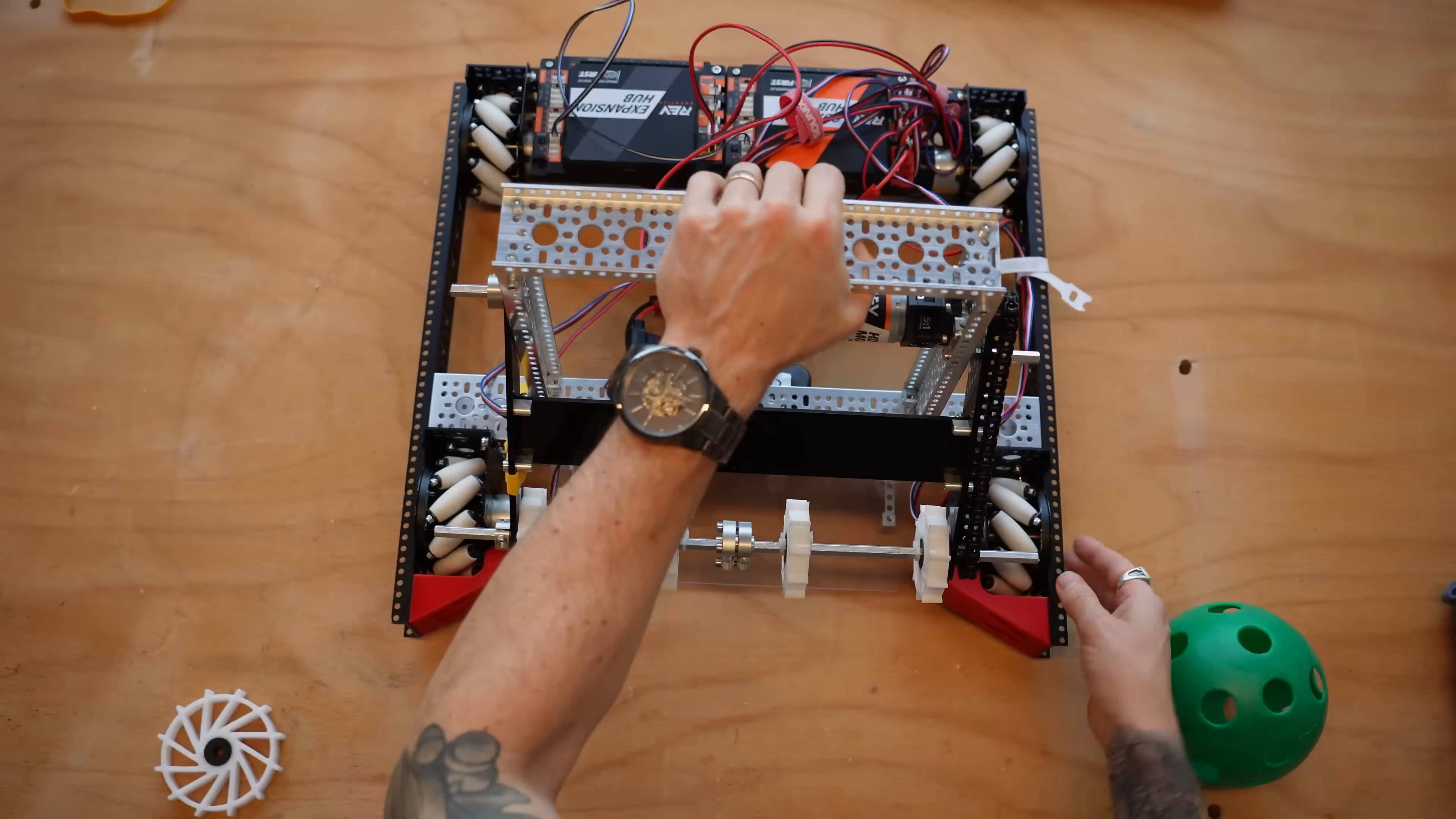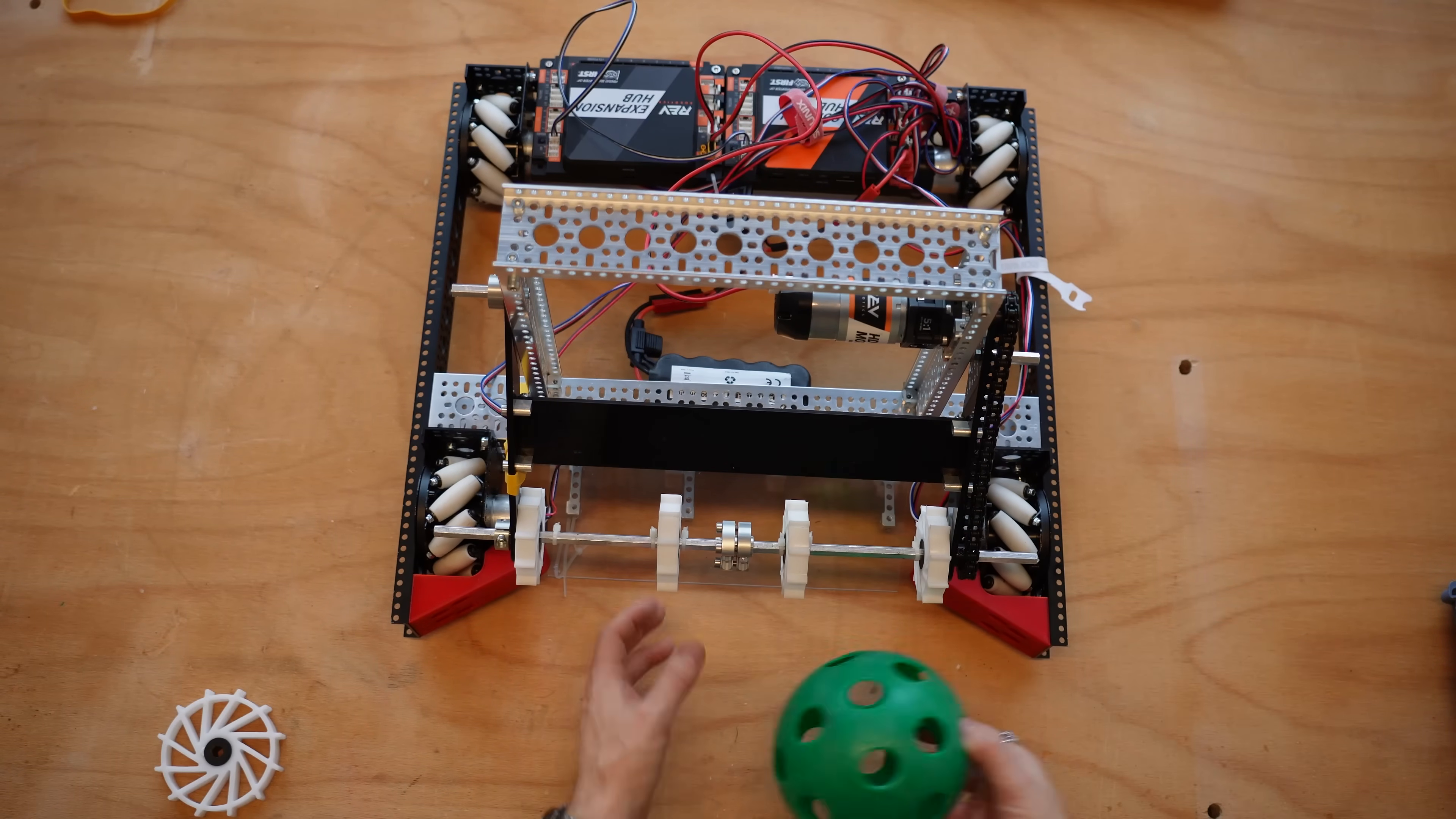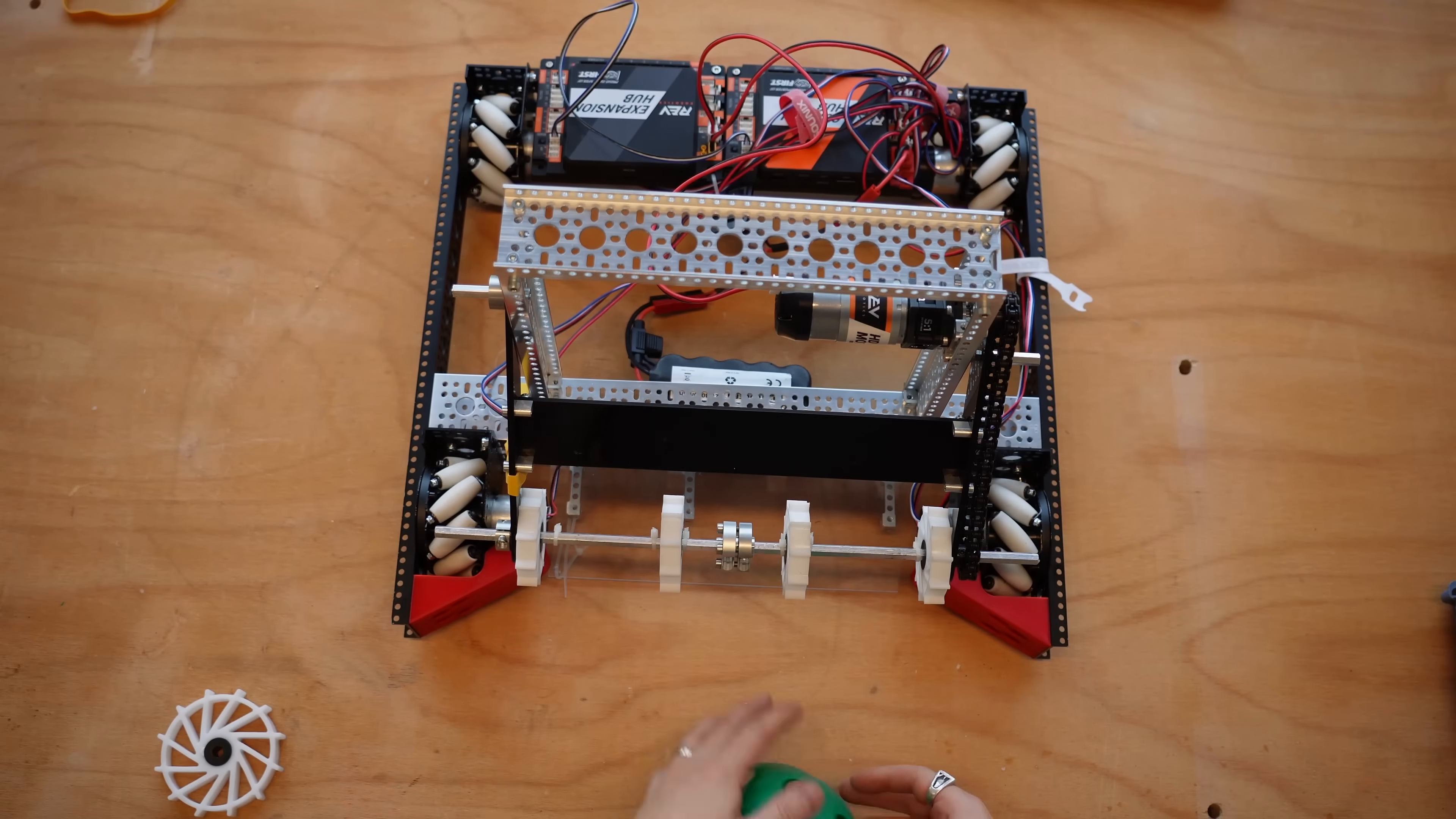So compliant wheel intakes are really nice, because it means that you don't have to be absolutely pinpoint accurate on your intakes or on your heights, because the amount of compression, the amount of squish that you place upon one of these balls really does affect your ability to pick one of these up and in.